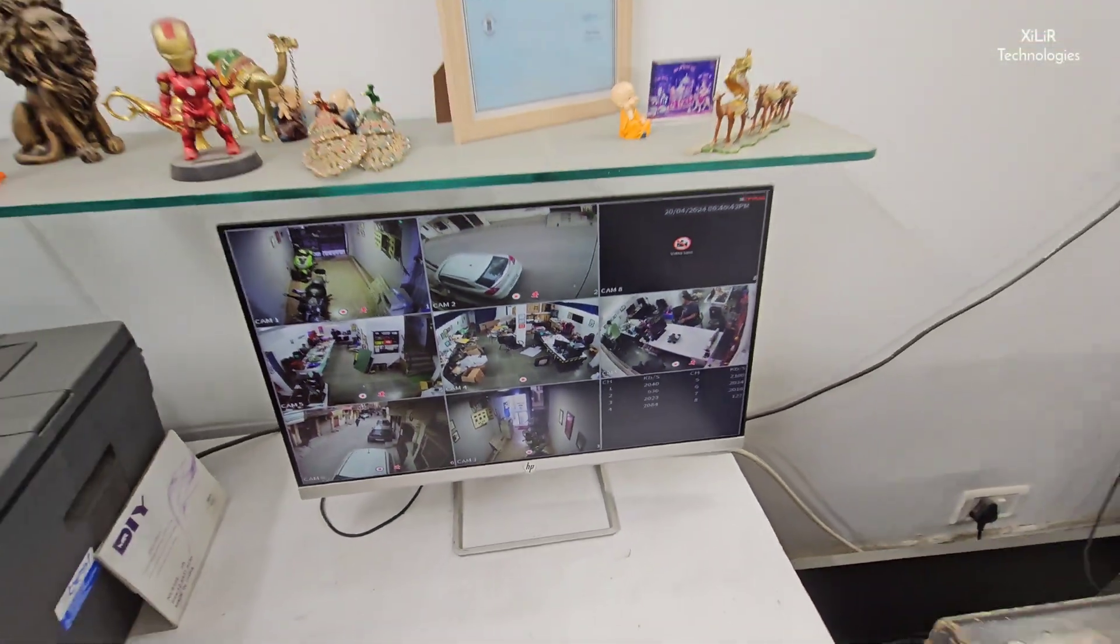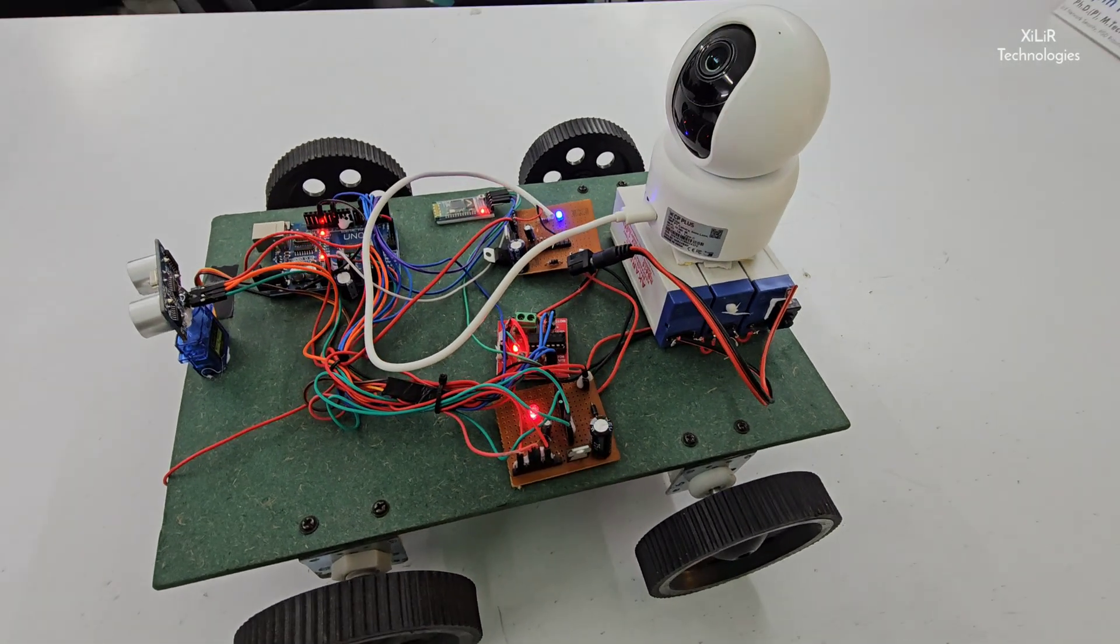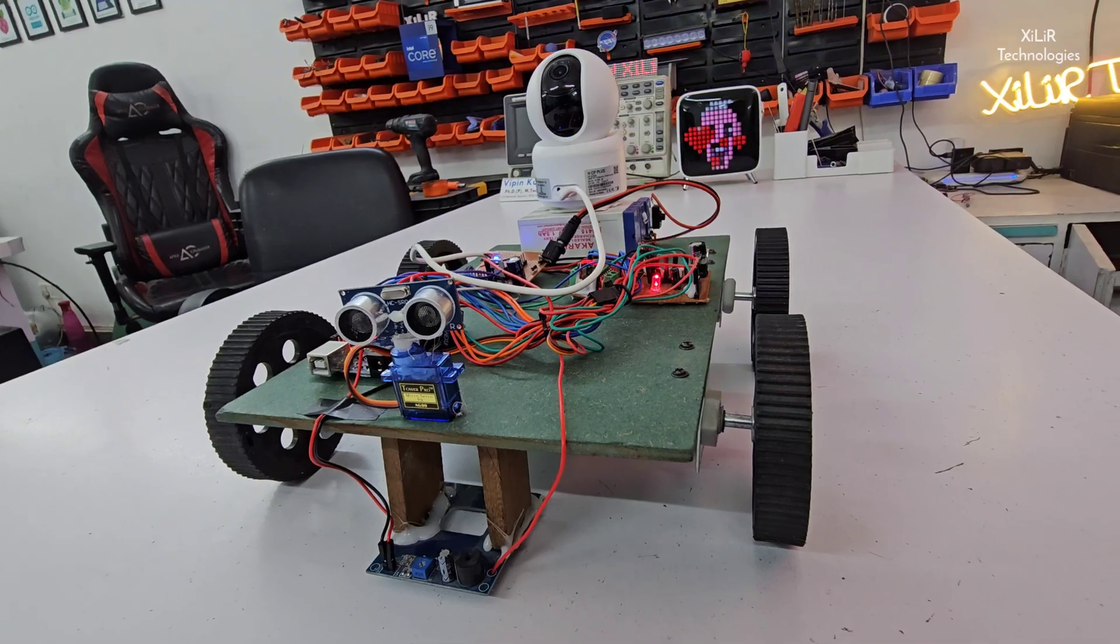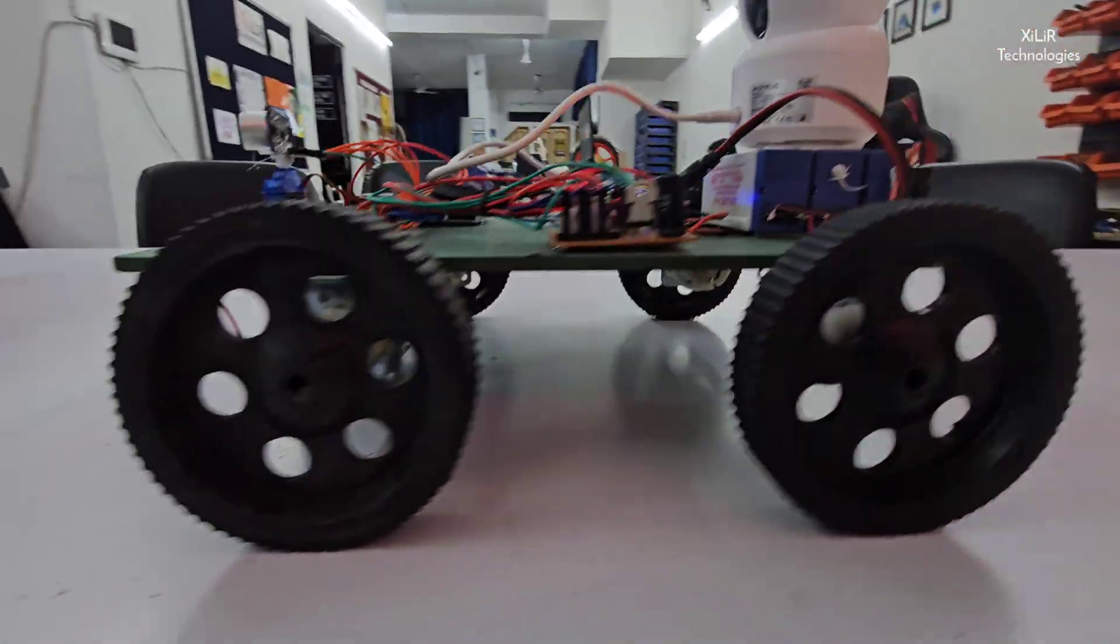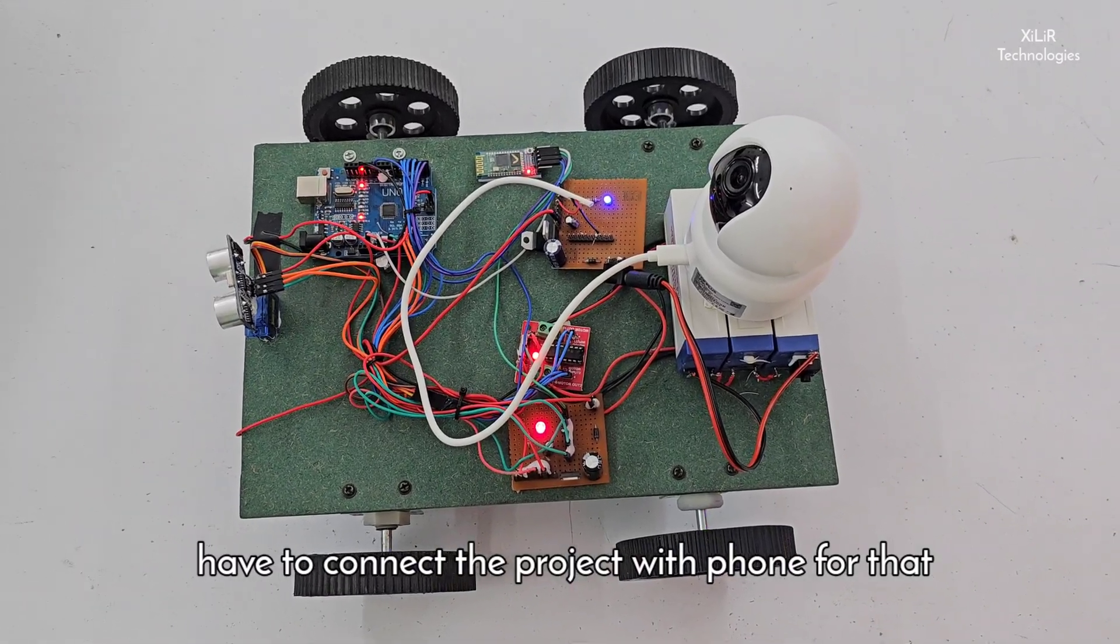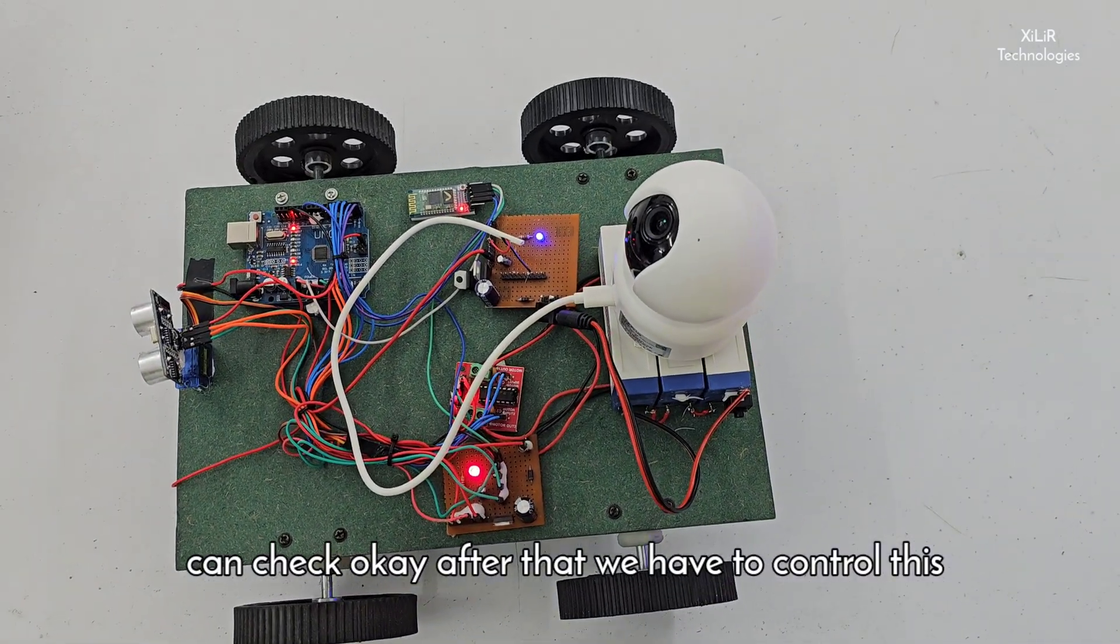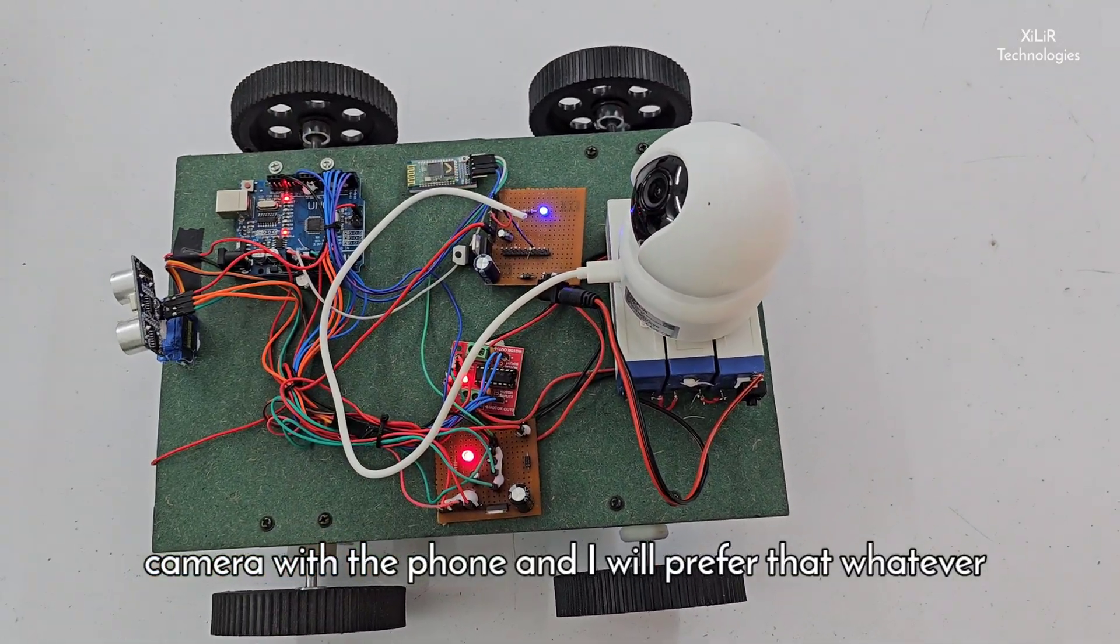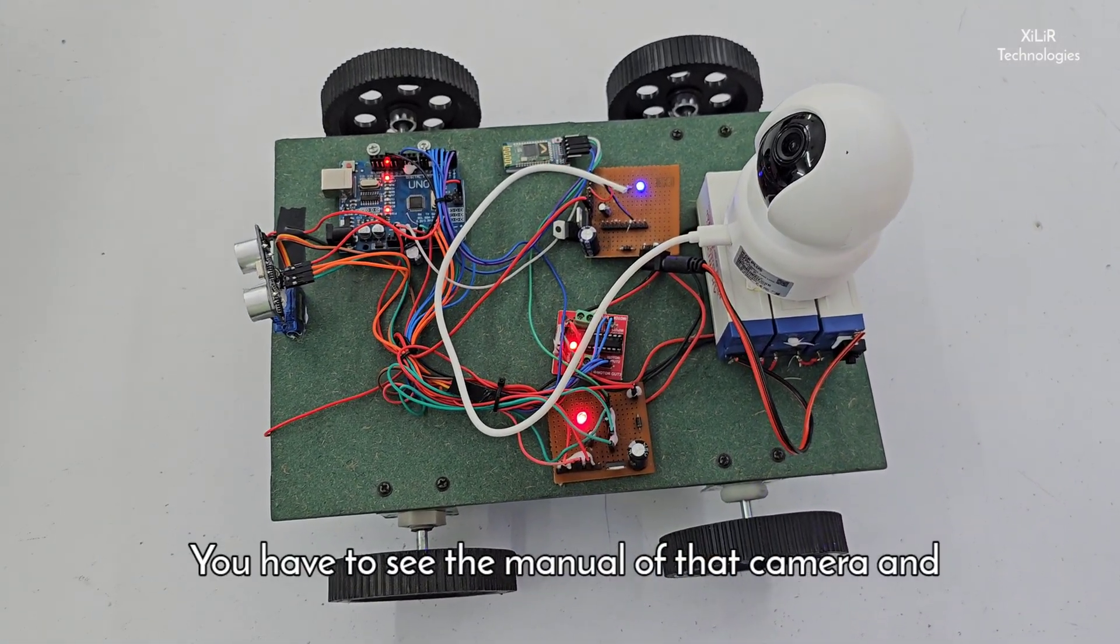Let's turn on the project. After this we have to connect the project with phone. For that I have added separate video in the link - you can check. After that we have to control this project through phone and also connect the camera with the phone. And I will refer that whatever camera, whichever camera you are using, you have to see the manual of that camera and connect it through the Wi-Fi link. And after that you will see the surveillance directly through that camera.